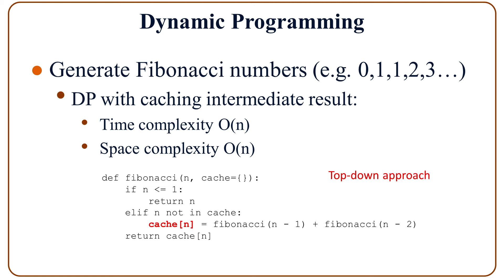So with dynamic programming we cache the intermediate result making it more efficient in terms of time complexity. If we add this line in, this line stores the intermediate result into the dictionary, namely cache. And this helps reduce the time complexity to O(N), the order of N.